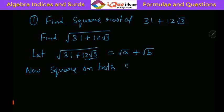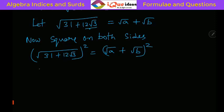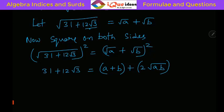Squaring both sides: (√(31 + 12√3))² = (√a + √b)². On the left-hand side the square root goes away, leaving 31 + 12√3. On the right-hand side we have a + b + 2√(ab). Now, a + b is rational and 2√(ab) is irrational on the right-hand side. Similarly, 31 is rational and 12√3 is irrational on the left-hand side. Numbers of the same type should be equated.